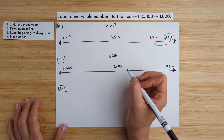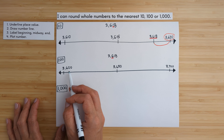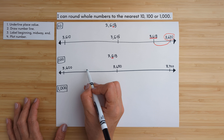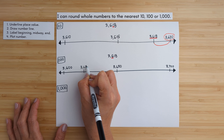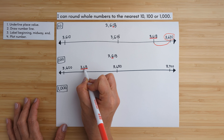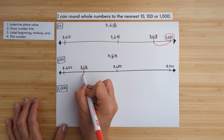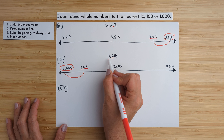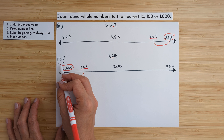Then we plot our number. 618 is less than 650, so 3,618 goes about here. We check whether it's physically closer to 3,600 or 3,700 — you can see it's definitely close to 3,600. So 3,618 rounds to 3,600 to the nearest hundred.